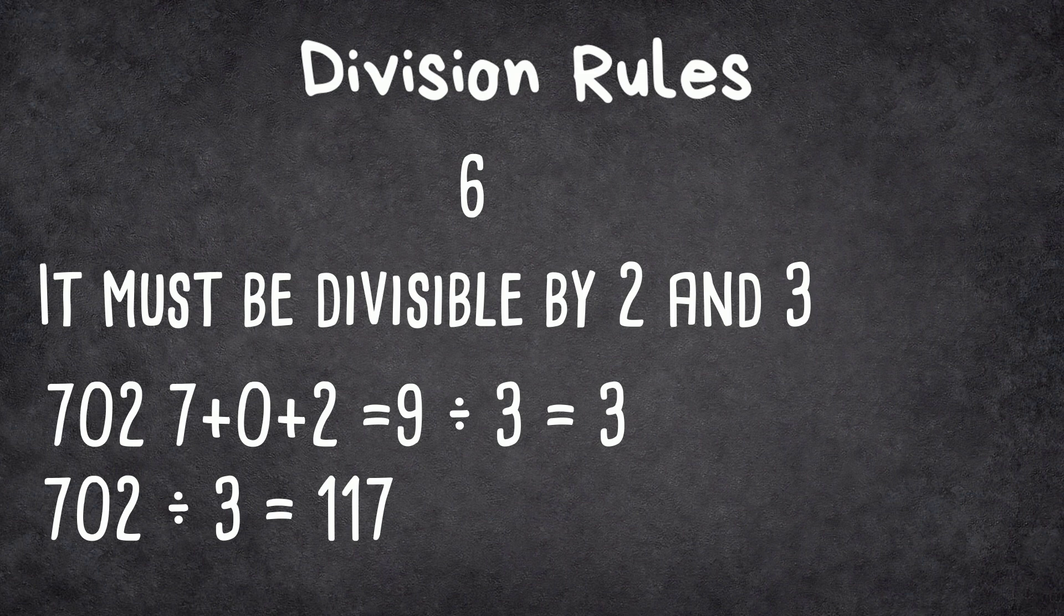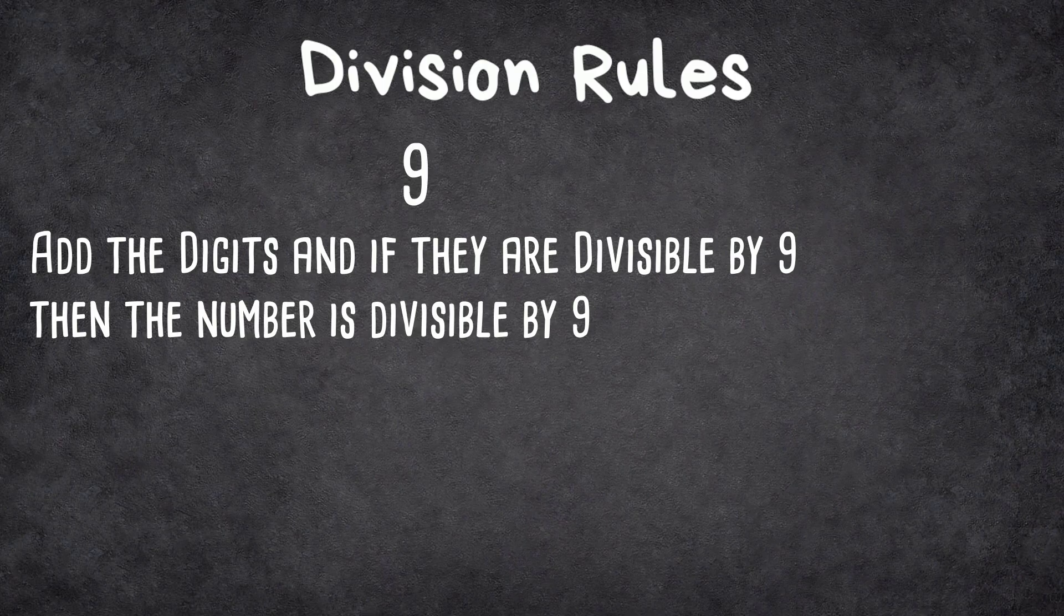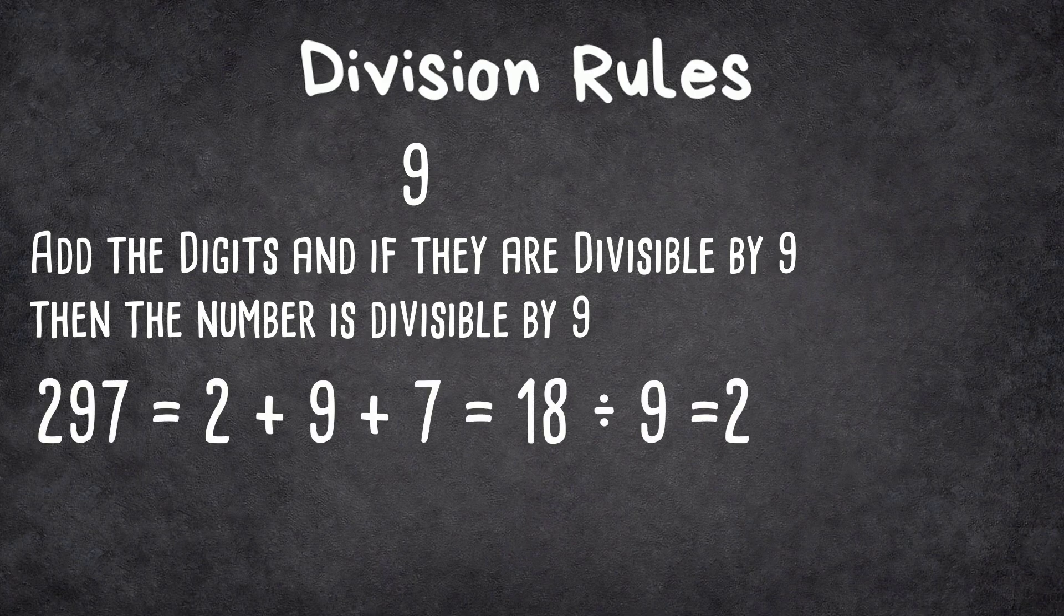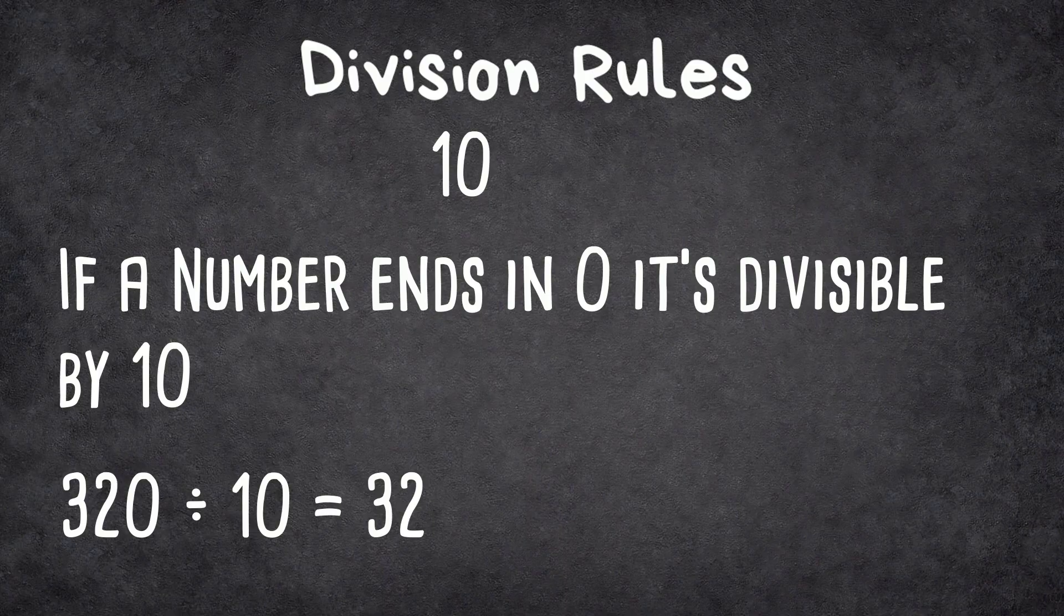Next, a number is divisible by 9 if you add the digits and that sum is divisible by 9. So for instance, 297: 2 plus 9 is 11, plus 7 is 18. 18 is divisible by 9, so 297 divided by 9 equals 33. And the last one, 10, is very easy: if it ends in 0.